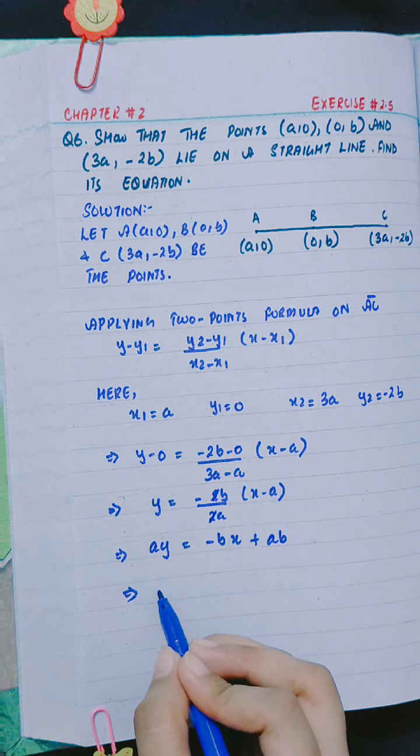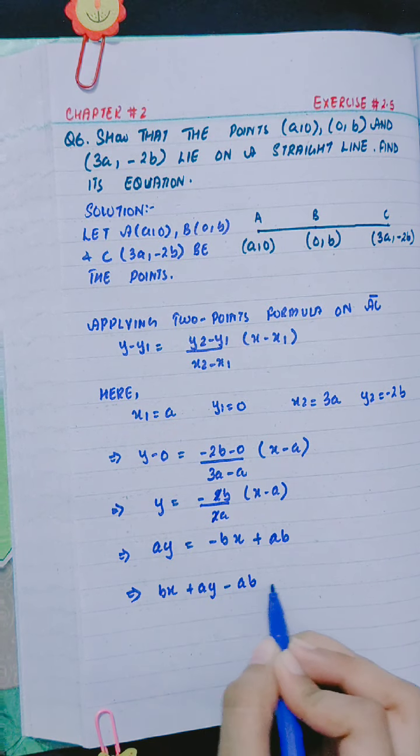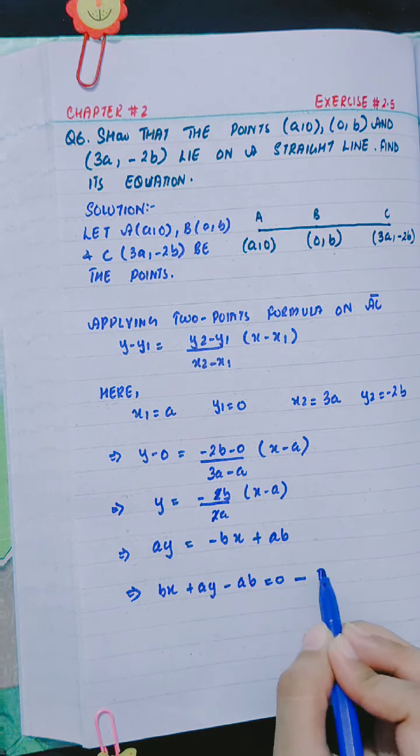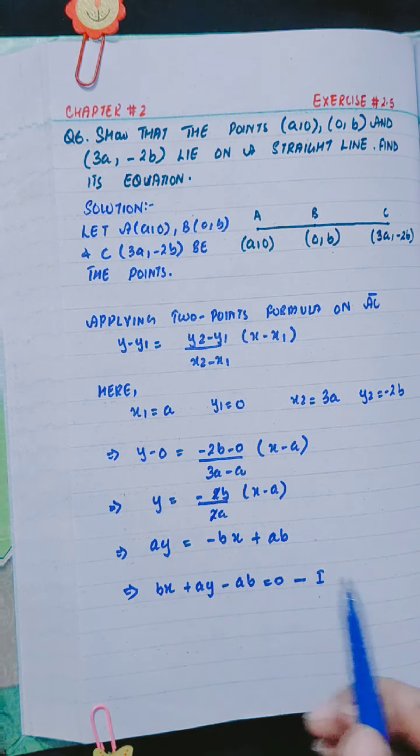So we get equation bx plus ay minus ab equals to 0, call this equation number 1. In dono terms ko hum ne left hand side pe shift kar diya.